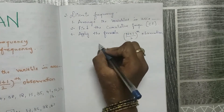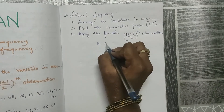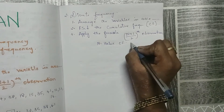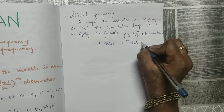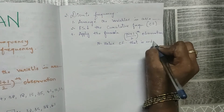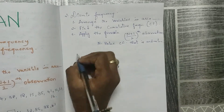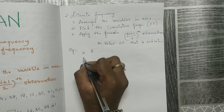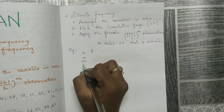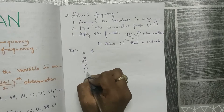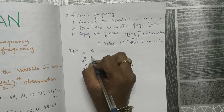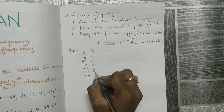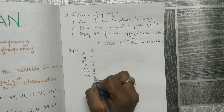Here, your n will be the last value of the cumulative frequency. For example, we have X and F values. The X values are taken randomly — say 50 and 60 — and the frequencies are 4, 7, 15, 8, 7, and 2.